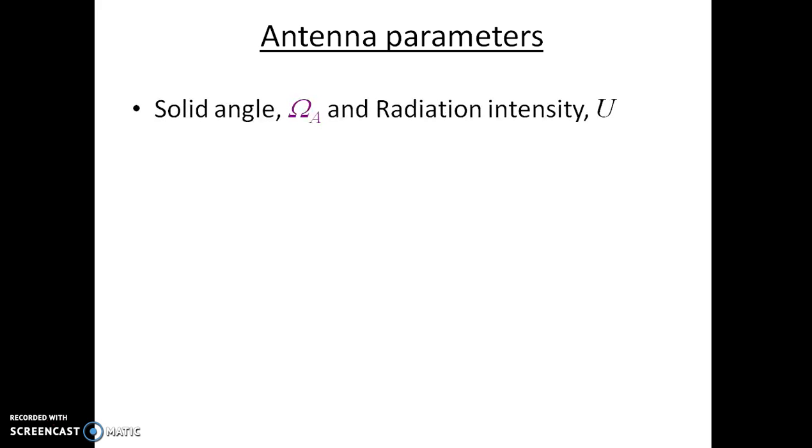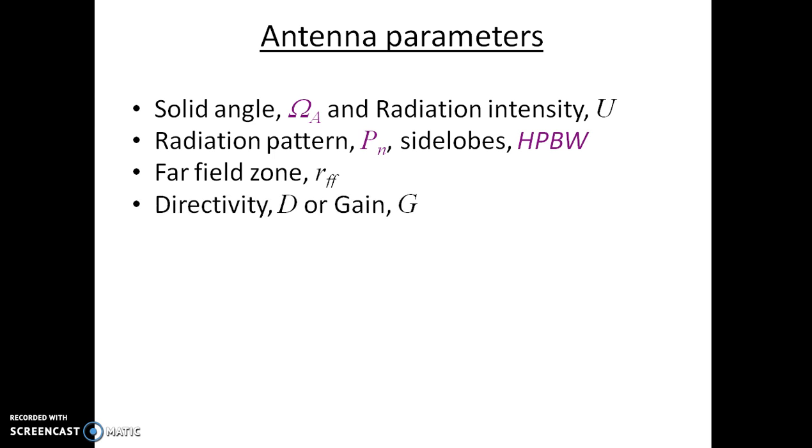Some other antenna parameters which are very important for understanding antenna are solid angles, radiation intensity, radiation pattern, side lobes and half power beam width which is abbreviated as HPBW, far field zone, directivity D or gain, antenna radiation impedance, and effective area.